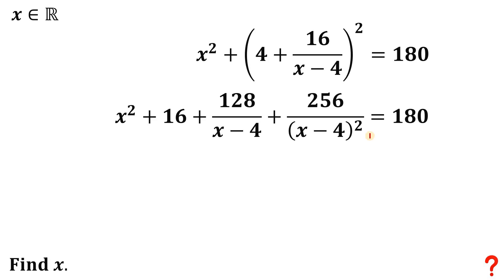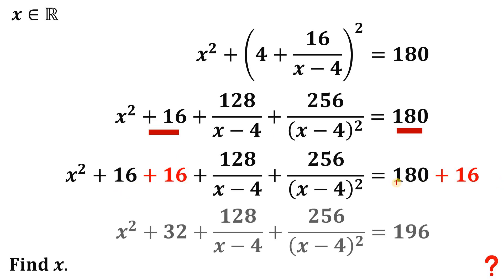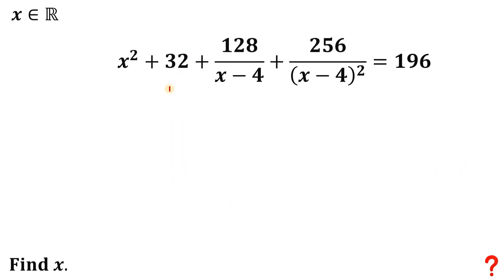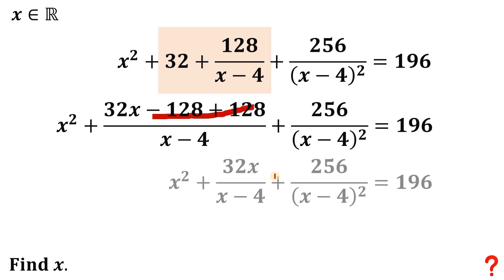Here comes the trick: instead of subtracting 16 on both sides, we add 16 on both sides. So 16 plus 16 gives 32, and 180 plus 16 is 196. Notice that 32 times negative 4 equals negative 128. So combining 32 plus 128 over (x minus 4), we get (32x minus 128 plus 128) all over (x minus 4), and the constant terms cancel, leaving the numerator as 32x.